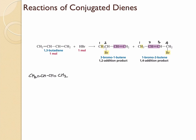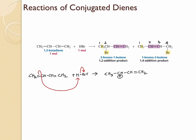Here we have 1,3-butadiene. The first step is where the electrons from the pi bond make a nucleophilic attack on the hydrogen, thrusting electrons onto bromine. This gives us a carbocation — the carbon that did not receive the hydrogen now has the positive charge. This carbocation is actually an allylic carbocation, which is resonance-stabilized. The electrons shift in resonance to give another contributor where the double bond moves between carbons 2 and 3, and the positive charge is now on the other terminal carbon.